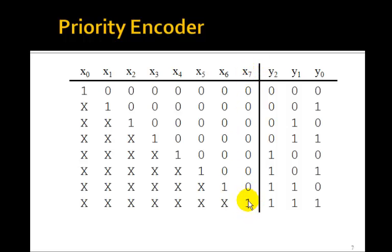x7 is the highest priority. That is, if it's a 1, then the output is 7, regardless of what all the rest of the x's are.